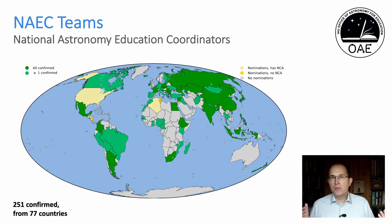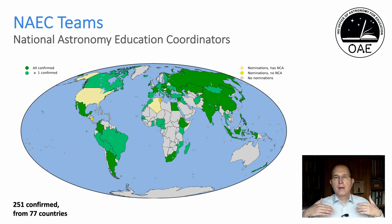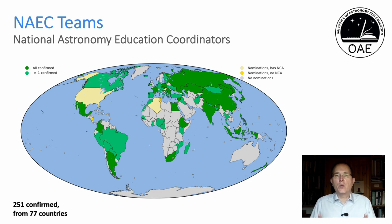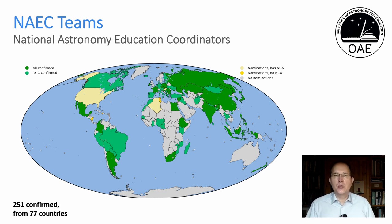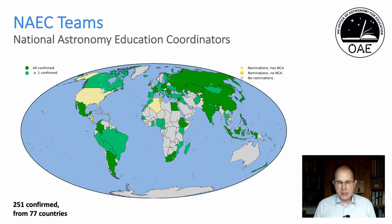Briefly about the NIAC teams — most of those listening to this talk during the workshop are part of those NIAC teams. You are our liaison to the local astronomical education communities, with a key role in both directions. What the OAE does cannot be top-down; we need to solicit from you what your country needs and what specific kind of support we can give your community. Currently there are 251 confirmed NAECs — National Astronomy Education Coordinators — from 77 countries, but there are still gray areas, so this number is going to grow.